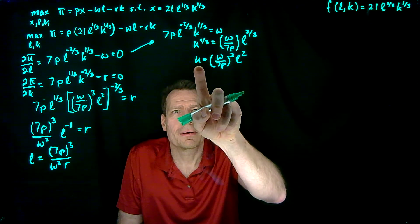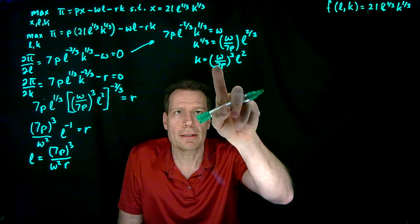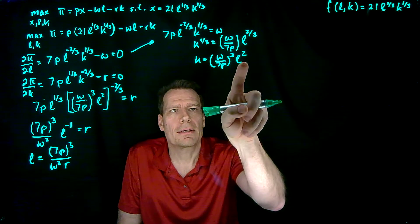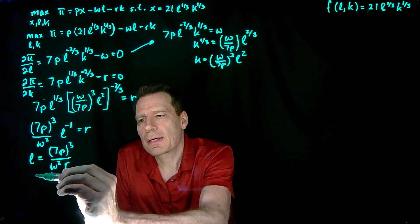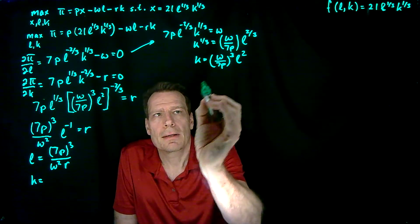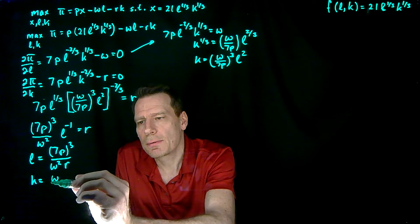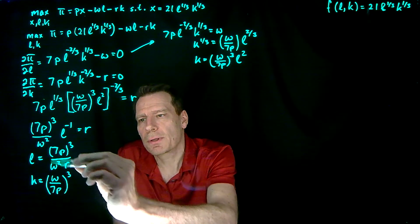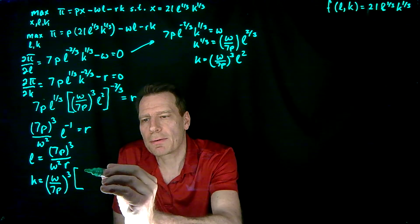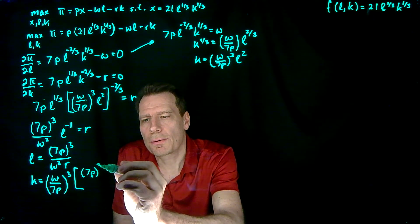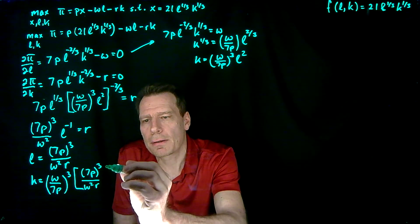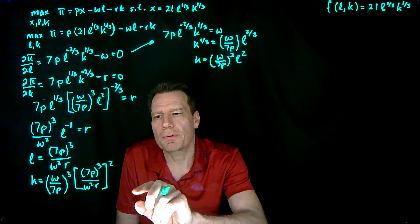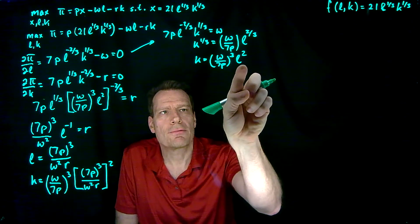We have the expression for K as a function of L and the prices. So we substitute this L into the expression for K. When we do that, we get K equals W over 7P to the third times L squared, where we use L equals 7P to the third over W squared R — putting big brackets around that whole thing squared.